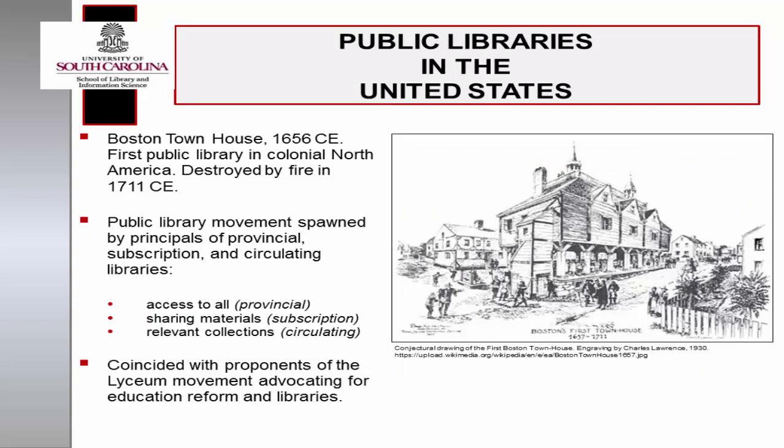The first public library in colonial North America was housed in the Boston townhouse. Robert Keene, an immigrant and tailor from England, bequeathed funds to the town of Boston for construction of the townhouse, and his collection of books was donated to the library in 1656 CE. The Boston townhouse was destroyed by fire in 1711 CE. The conceptual foundation for the modern public lending library in the United States sprouted from ideas relating to access, sharing, and relevance of materials, rooted in the principles of the provincial, subscription, and circulating libraries. These principles coincided with ideas promoted in the Lyceum Movement, which advocated for education and other social reforms along with the building of libraries.